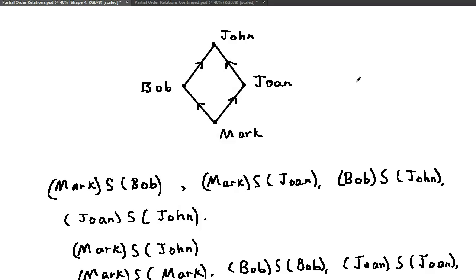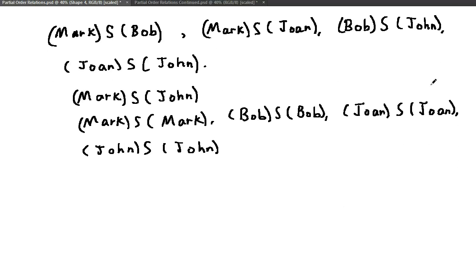Note that S is not symmetric, since Mark is shorter than Bob, but Bob is not shorter than Mark. Okay, so we have Mark S Bob, but it is not the case that Bob S Mark. So S is not symmetric.